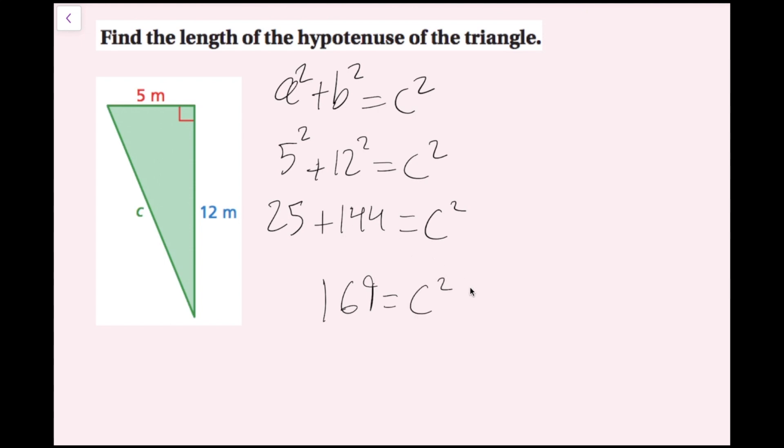I'm going to bring down my C squared, so I get 169 equals C squared. From the last section, the way we would solve this equation for C is by taking the positive and negative square root of both sides. But since we're dealing with a side length, we can't have a negative length, so all I need to do is take the positive square root of both sides.